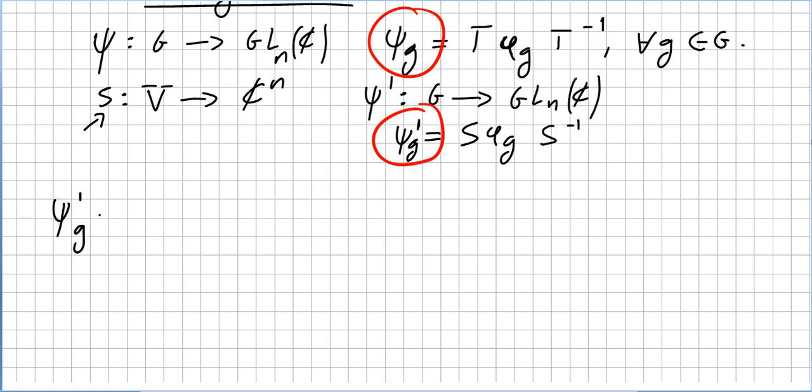They are related, for g, right, through this formula, so ψ prime g—what do I, I'm going to put first this, I have to write it, I always have to write this way—so in this case it will be T, T inverse, because this one is inside, and now it will be S, S inverse.